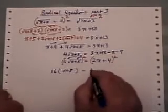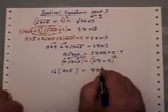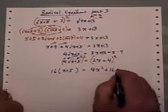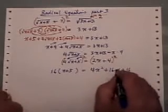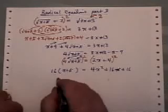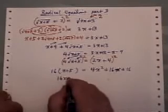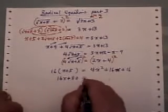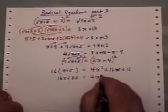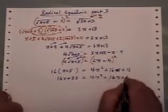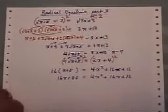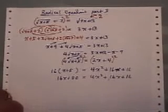The right-hand side becomes 4x squared plus 16x plus 16. This becomes 16x plus 80. And we also have a 16x over here plus 16. We now no longer have any square root signs.